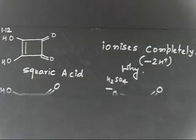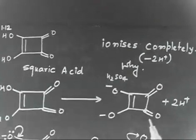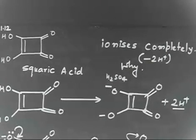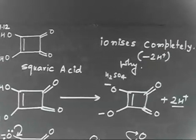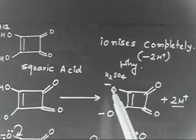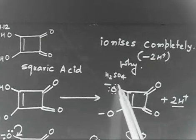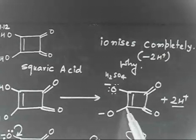Okay, let's discuss the solution of this question. What we can make is: if I lose this H+ and this H+, I will make this dianion — so this minus, this minus, and 2H+. This is acting as a dibasic acid because it is losing 2H+. Now let us start writing the resonating structures.